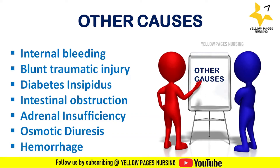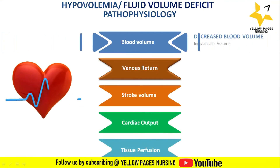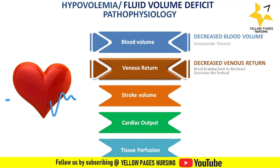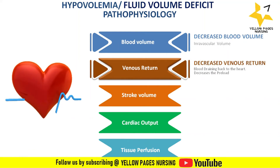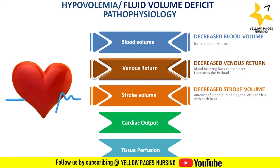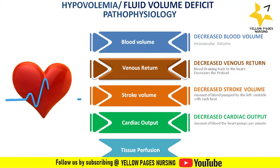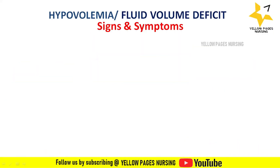Pathophysiology of hypovolemia: decreased intravascular volume causes decreased venous return to the heart, reducing preload. This leads to decreased stroke volume — the amount of blood pumped by the left ventricle per beat — and further decreases cardiac output, the amount of blood pumped per minute. This finally leads to decreased tissue perfusion.